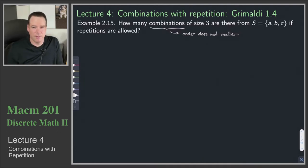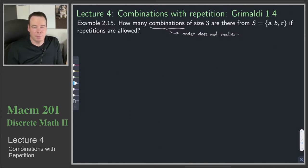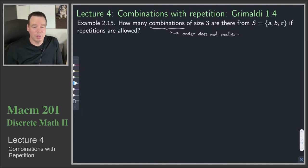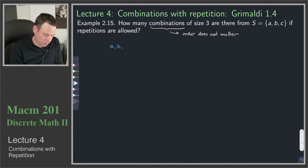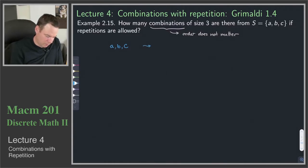So how many combinations of size 3 are there if we're going to allow repetition? One way we can do this is just list them. Our ultimate goal is to count more like a professional — figure out how we can attach these new objects to some we already know how to count. But for getting a feel for what's going on, it's perfectly fine to start listing things. One possible combination is one of each type: A, B, C.